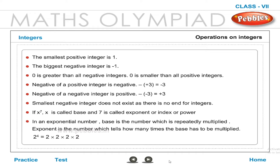Division by zero does not exist as there is no result for integers divided by zero.